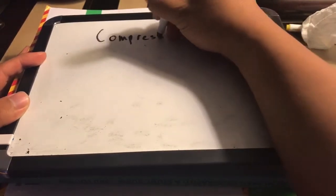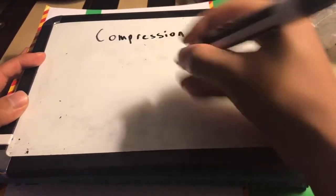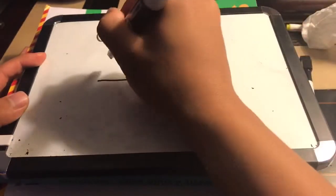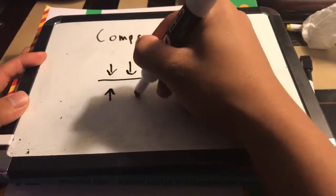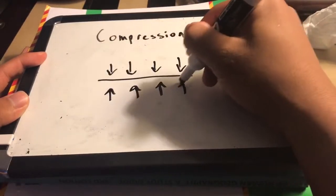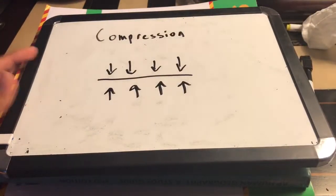There are many different types of forces that affect the actual stability of bridges. Today, however, I'll be talking about two of the most important ones, compression force and tension force. Compression force is any sort of force that tries to compress or make the material smaller. For example, if you press your two hands together, that's a compression force.